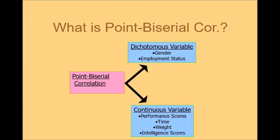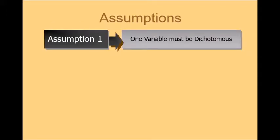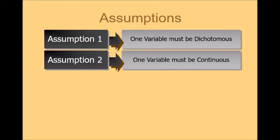But before conducting the point biserial correlation analysis, you have to fulfill certain assumptions. Assumption number one: one variable must be dichotomous. So you have to assure that one variable must be dichotomous. Assumption number two: one variable must be continuous. Therefore, you will test the association between both variables that is called point biserial correlation.